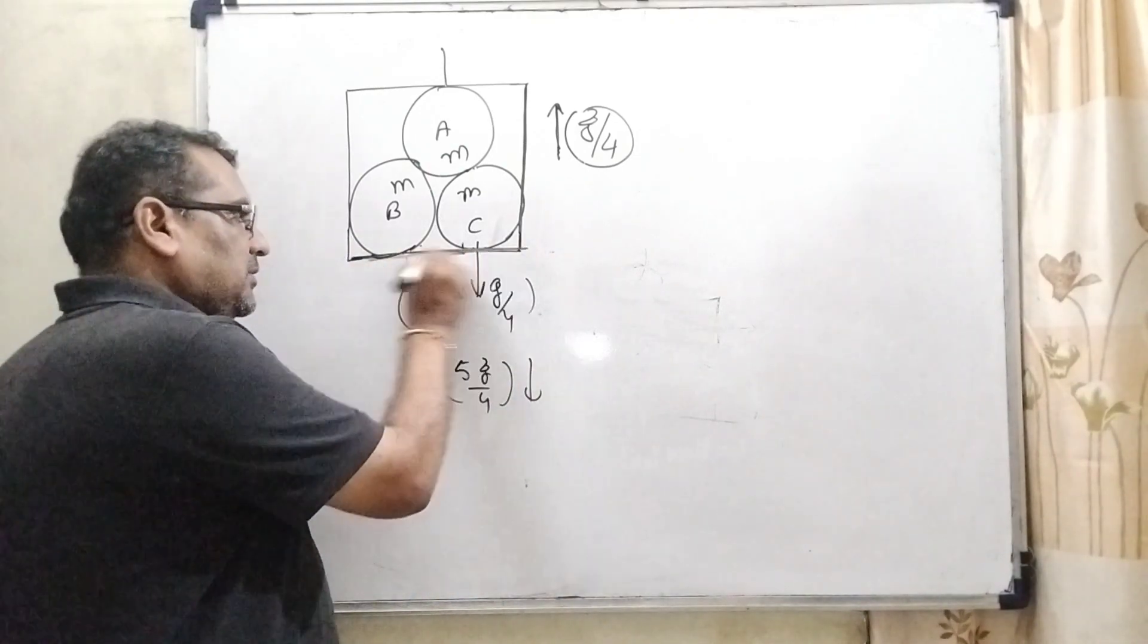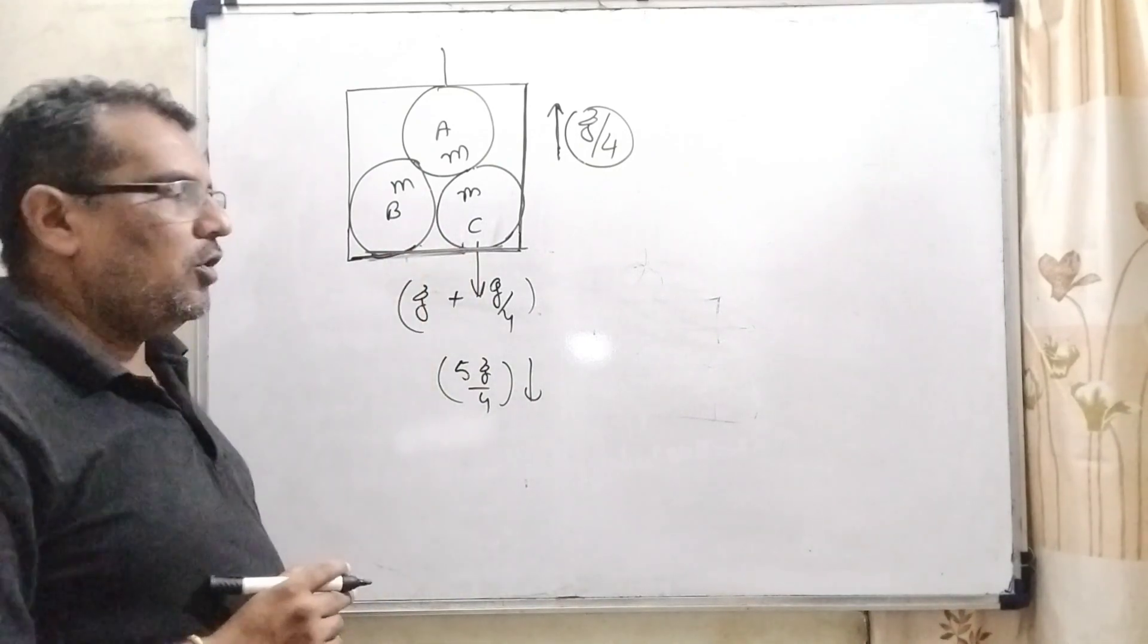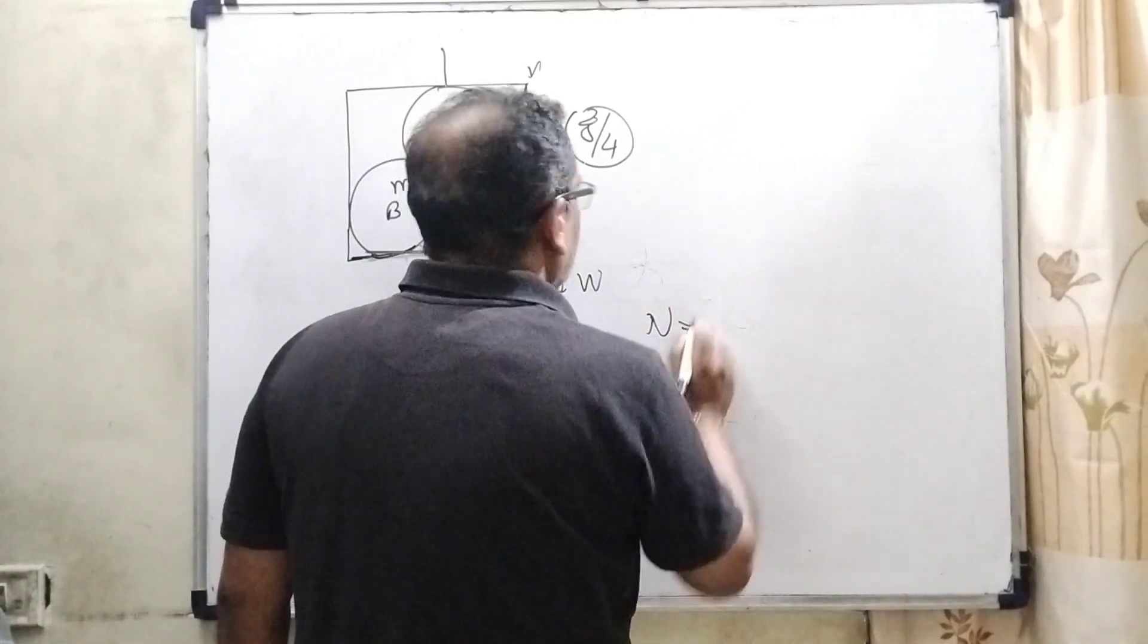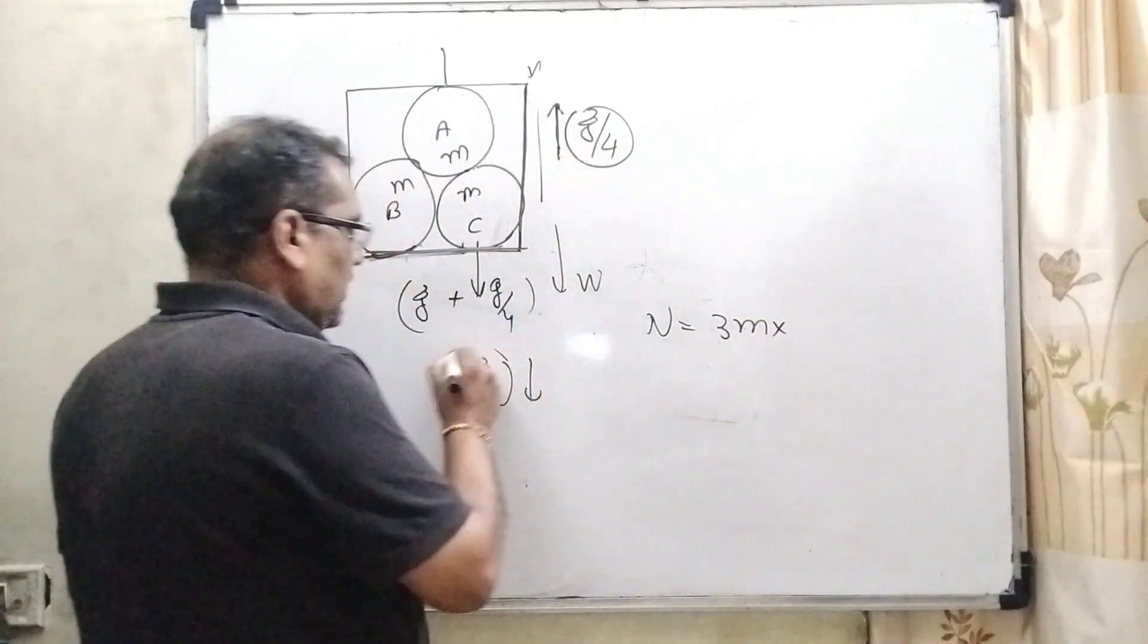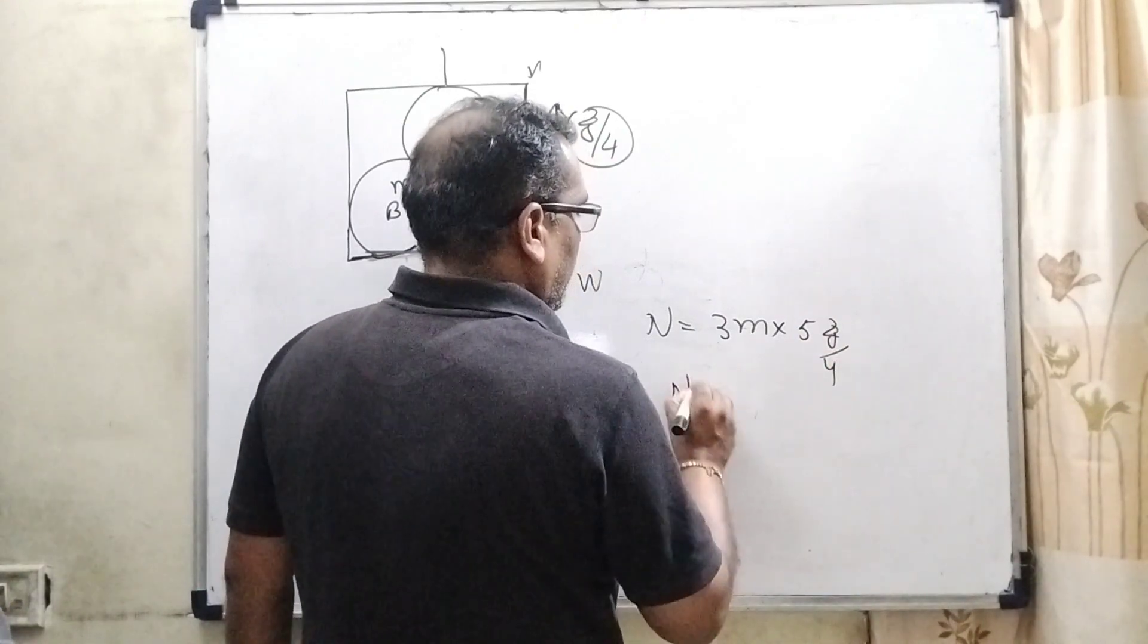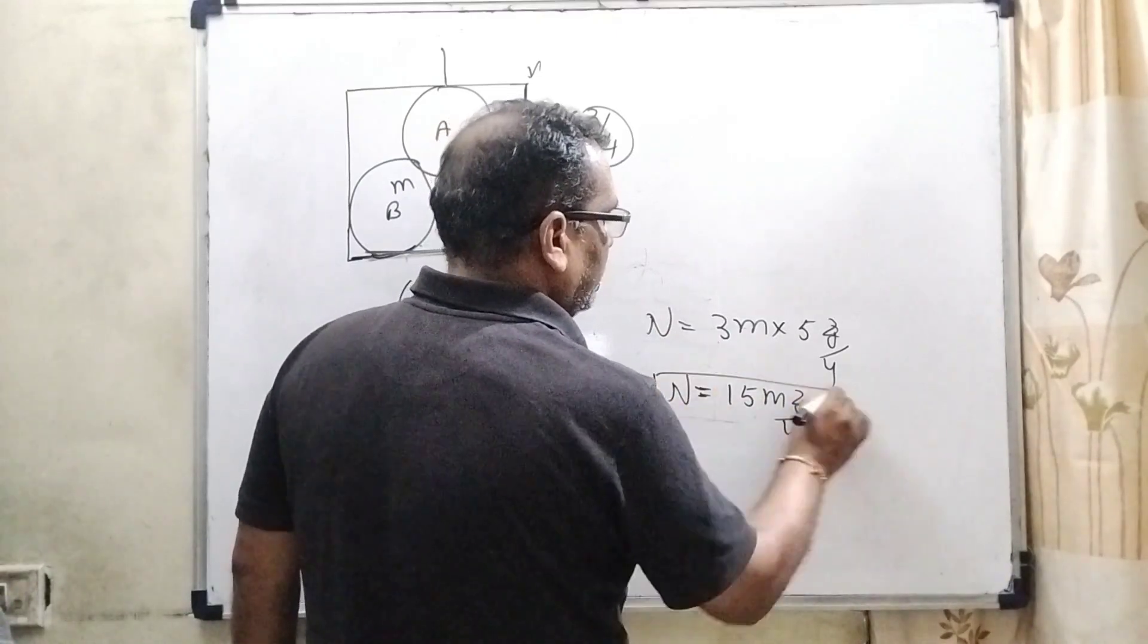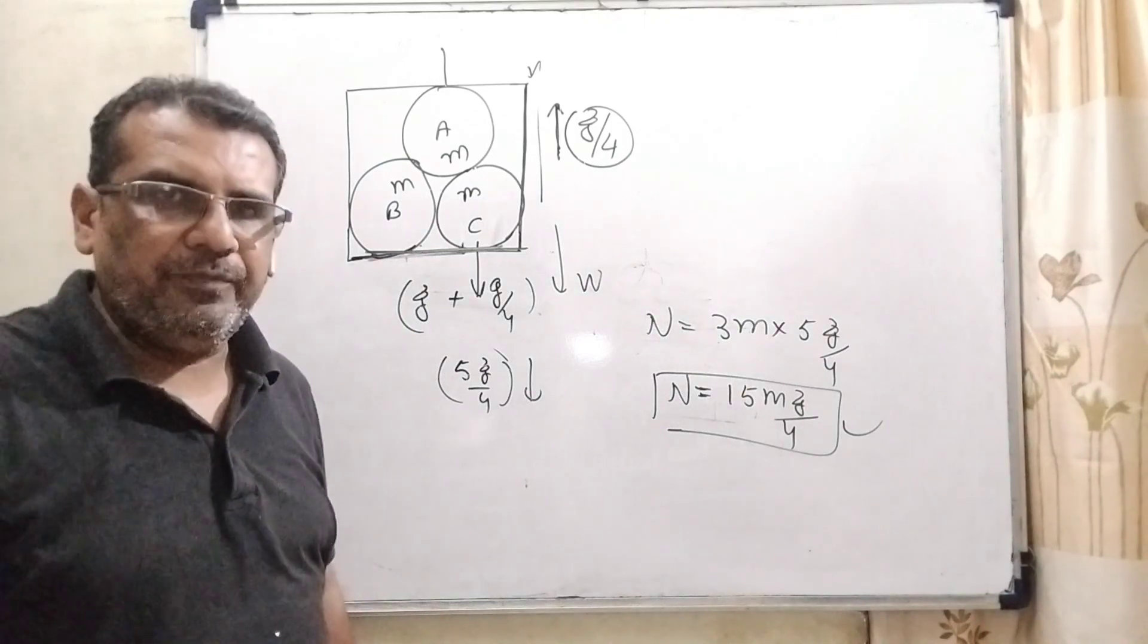So, we have to find first the net normal force. Net normal force means normal force N. Therefore, N equals total weight. What is the total weight? Three masses, so 3m times total acceleration, that is 5g by 4. So, normal force equals 15 mg by 4 at the bottom. So, here that is the first answer.